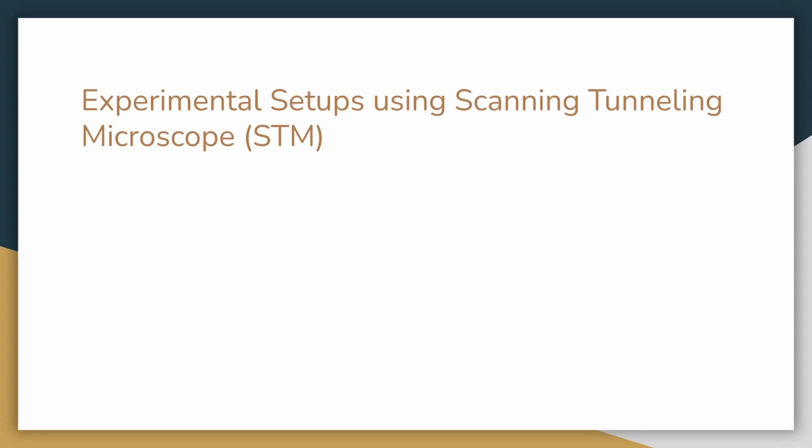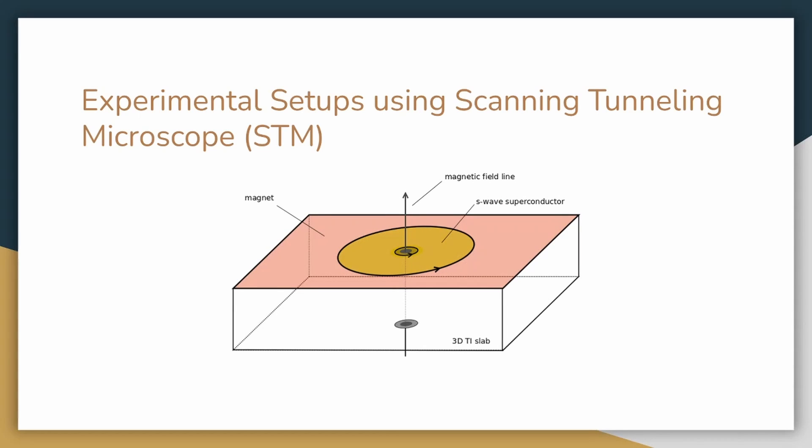In finding MZMs, two main mediums are used. The first method is using a flat sheet of a superconductor. The holes are produced into the sheet and those added holes are expected to produce Majorana particles. We can check the presence of MZMs by using a scanning tunneling microscope.